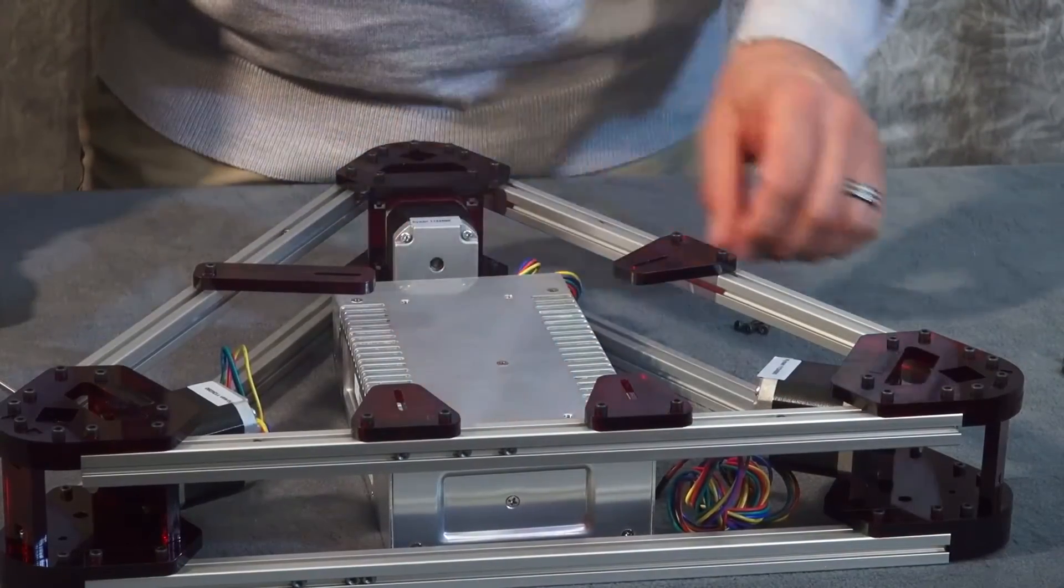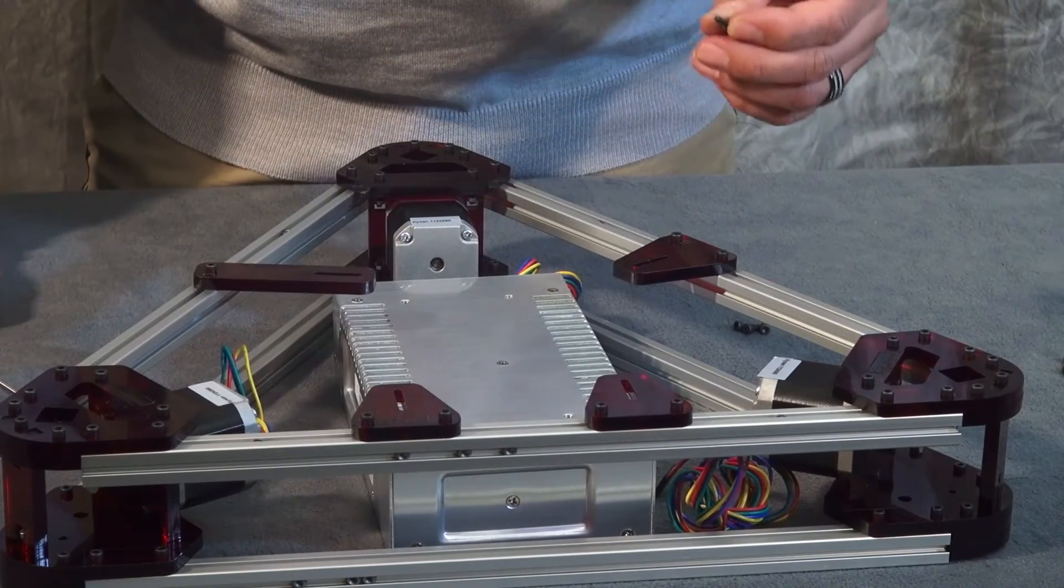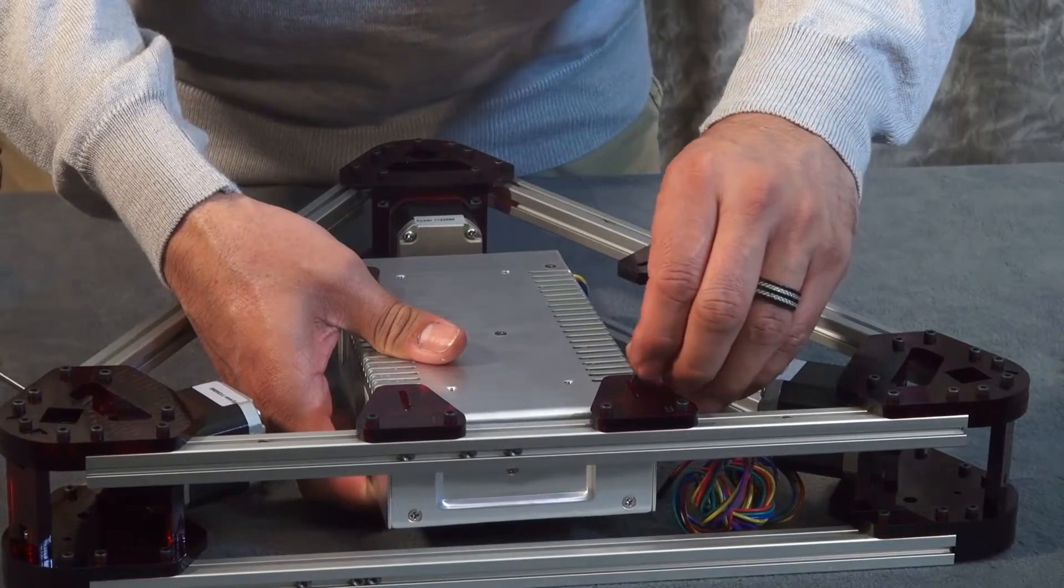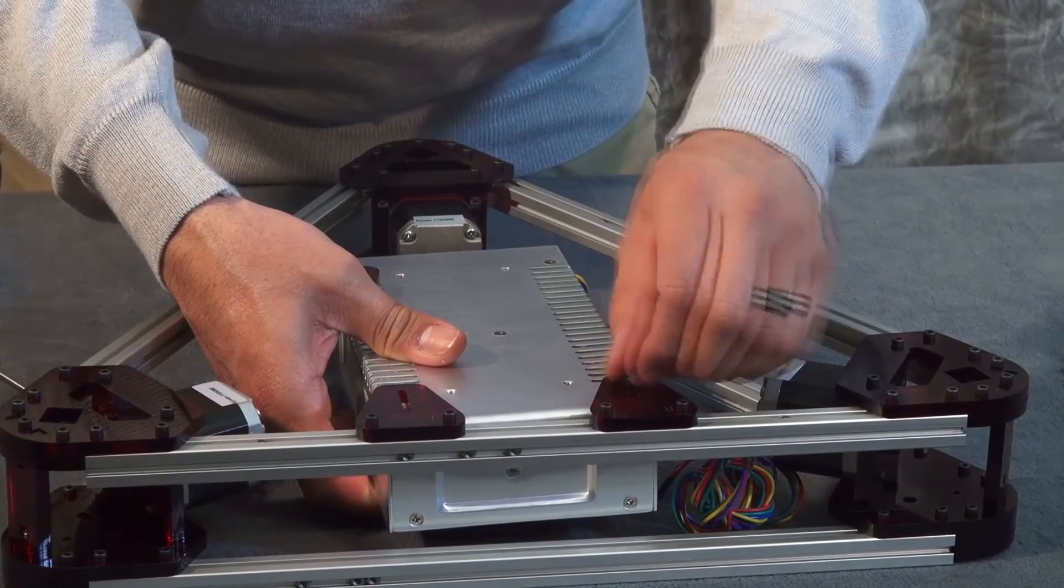Now to install the power supply onto the brackets, you're going to need four M3 by 8mm bolts. Line up your holes individually. Hand tighten it in there.